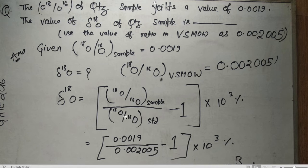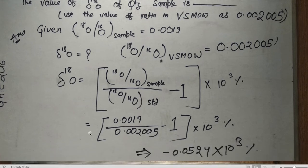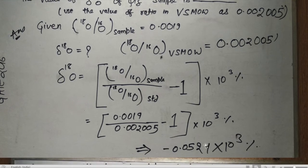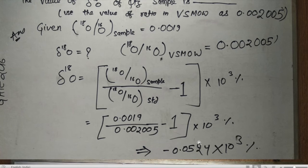Putting in all values: δO18 = (0.0019 / 0.002005) − 1, multiplied by 10³. The answer becomes −52.4 per mil (i.e., −0.0524 × 10³). The key point to remember is only the formula: (sample / standard − 1) × 10³. This is from GATE 2016.